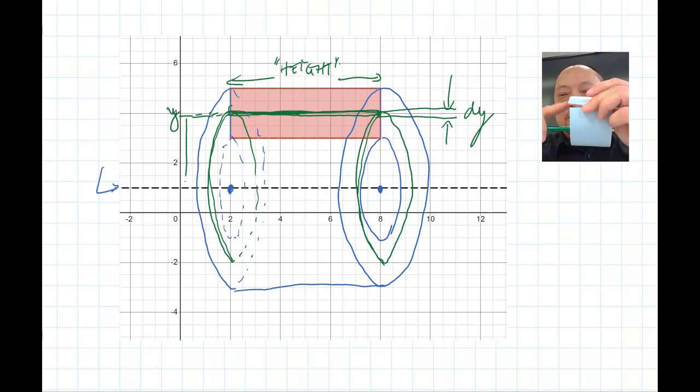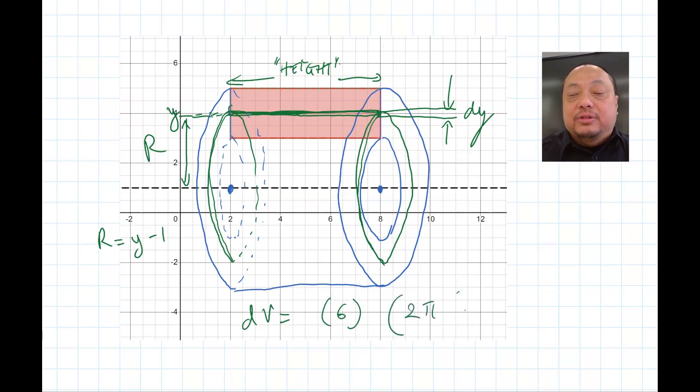And the circumference is 2π times radius. And then dv is equal to height times circumference times dy. Total V is the integral of dv from this point, the starting point, to this point, the ending point.